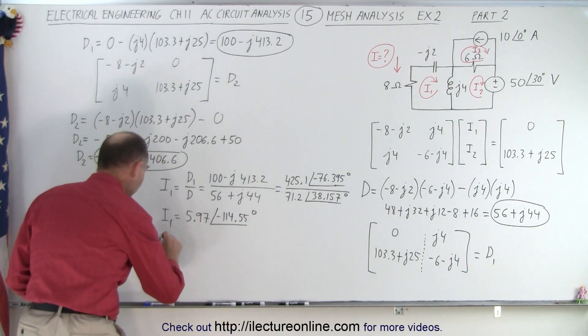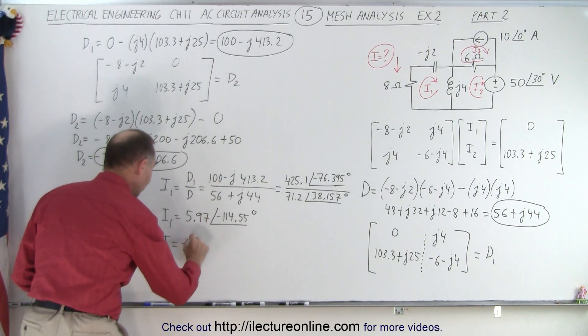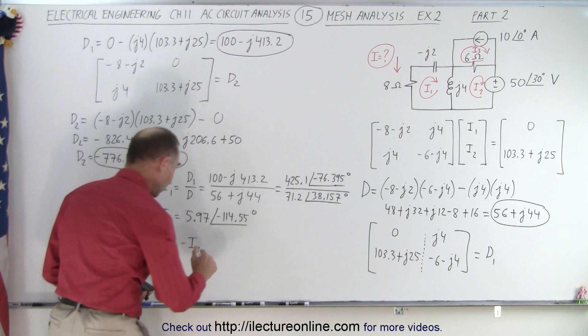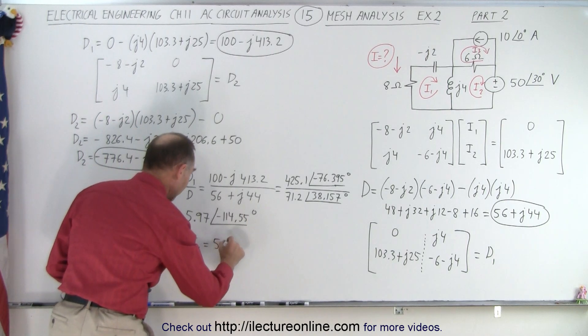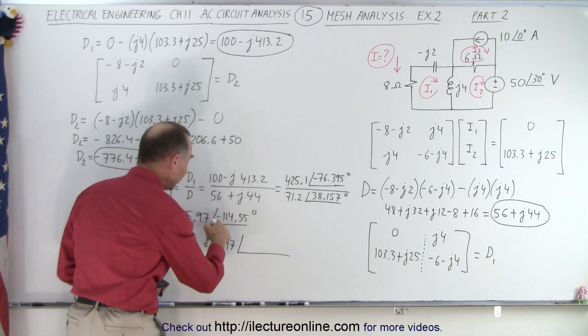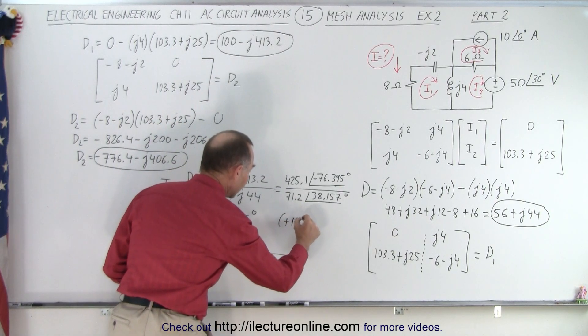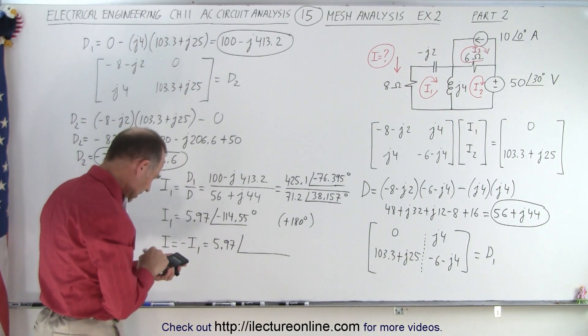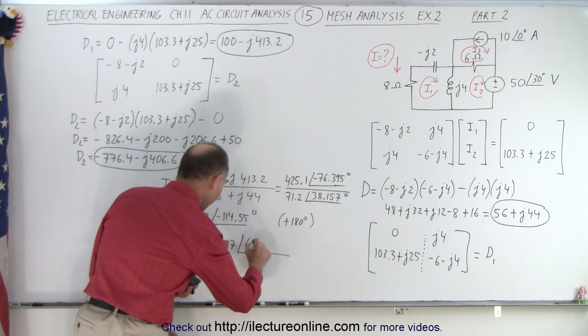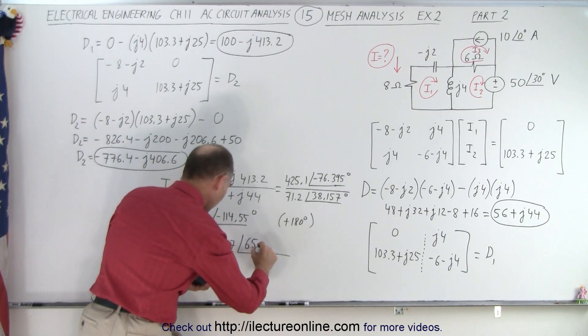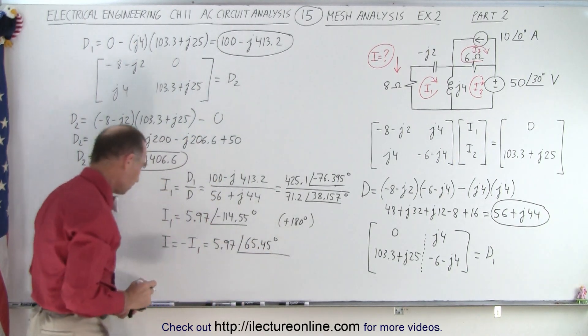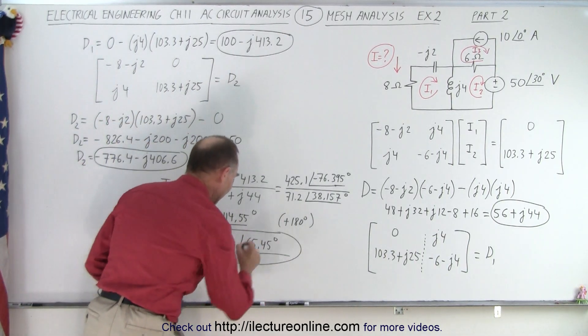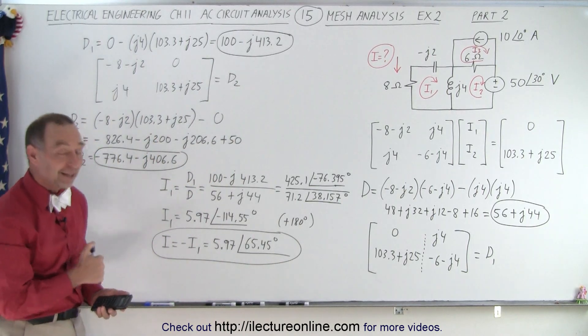Now, of course, remember that I is in the opposite direction, which is the negative of I1, which simply means we're going to take this and add 180 degrees to that. So that would be equal to 5.97 with a phase angle of minus 114. So we're going to plus 180 degrees to account for the negative sign right here. So plus 180, and that gives us an angle of 65.45 degrees. And that then would be the value for the current in mesh number one. And that is how it's done.